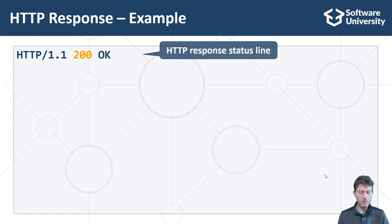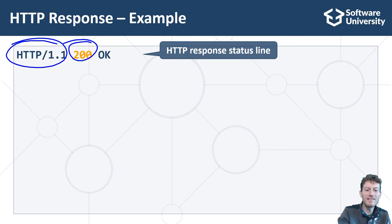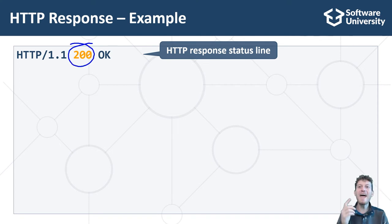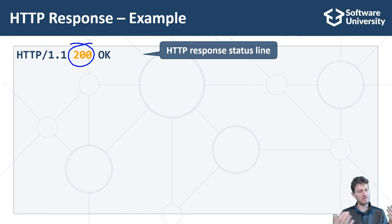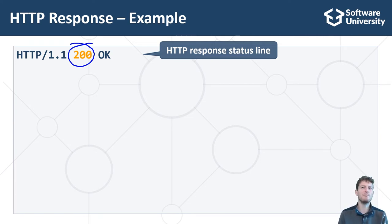The HTTP response status line starts with the protocol version, followed by the response status code, followed by a human-readable text explanation of the status code. The status code tells the client whether the requested operation was successful or not. It may report success with status code 200, or error with status code 400 or 500, or other. There are many status codes specified in the HTTP standard.